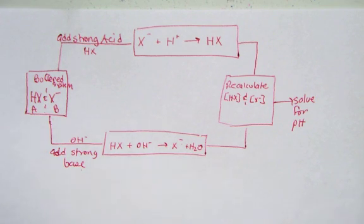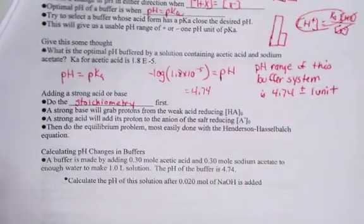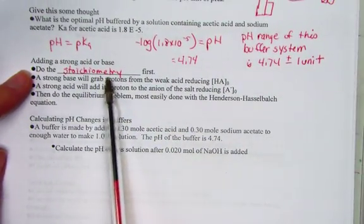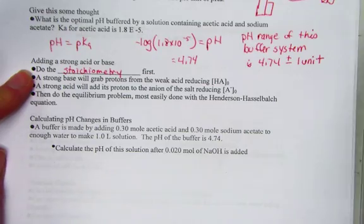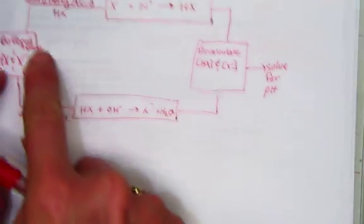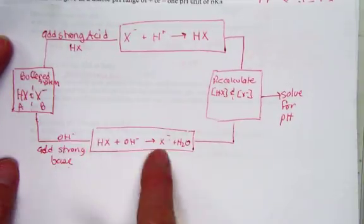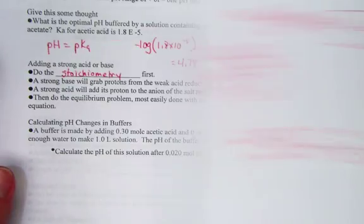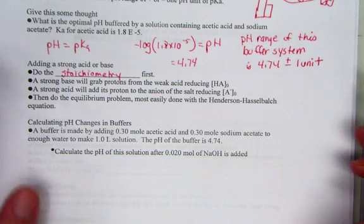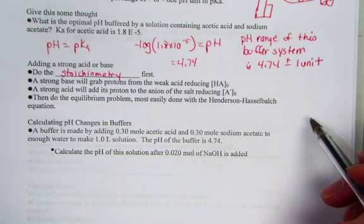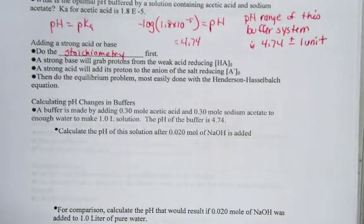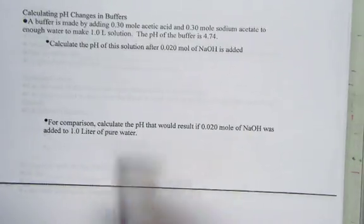So, back to the notepad page. Adding a strong acid or strong base, we consider the stoichiometry first. And that's all I really said in a visual. We're going to consider the stoichiometry to find out how much acid or base is left after we've had our reaction. And then off to the Henderson-Hasselbalch to calculate pH. Let's take a look at a model problem. Calculating pH changes in buffers.